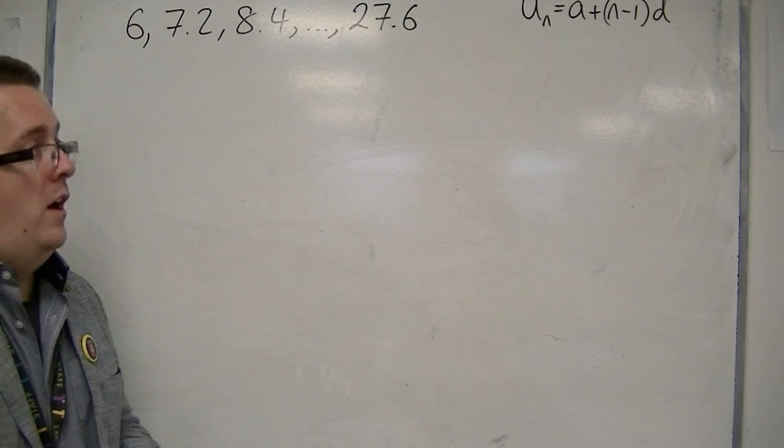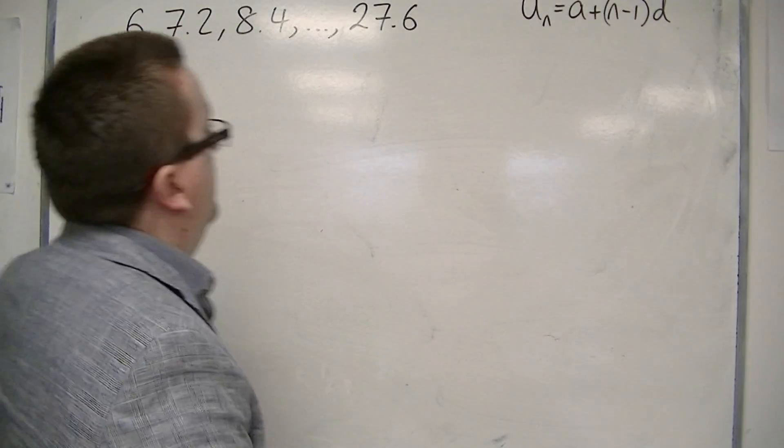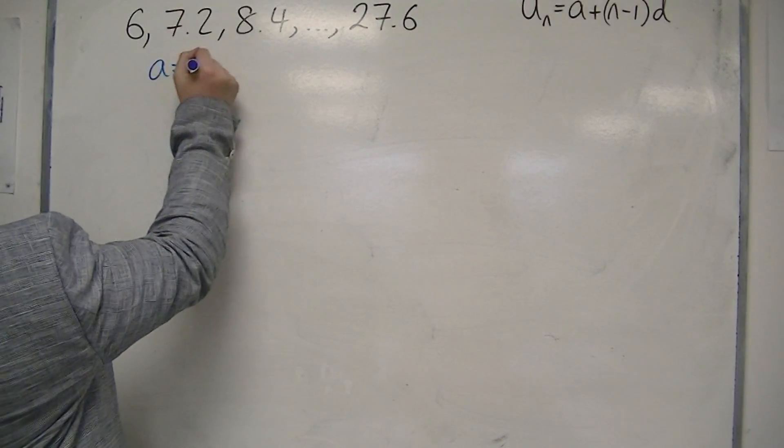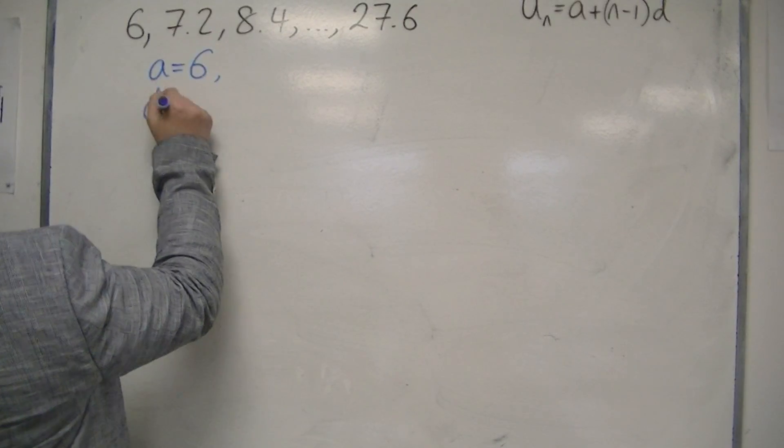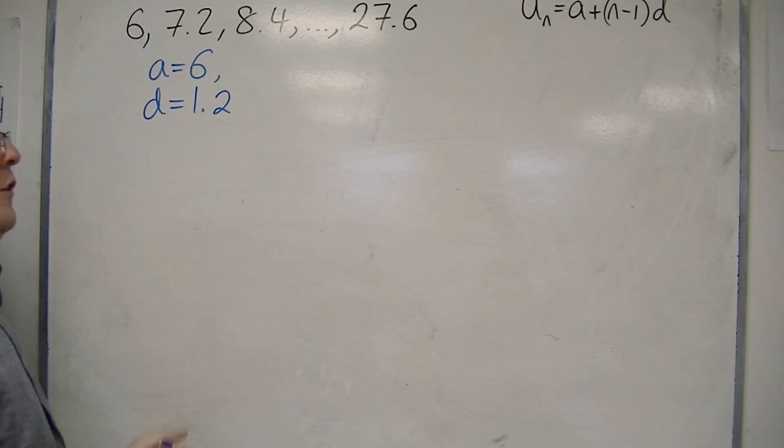First of all, I'm going to need to identify what a and d are. So a is 6, and d is the common difference, what I'm adding on each time, and that's 1.2.